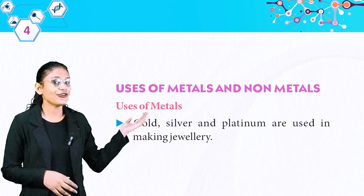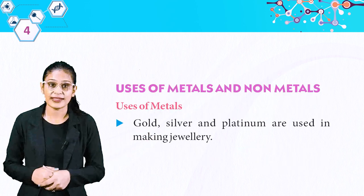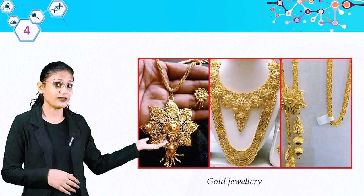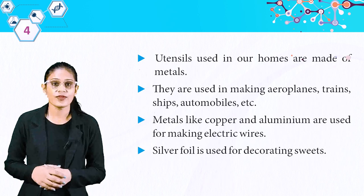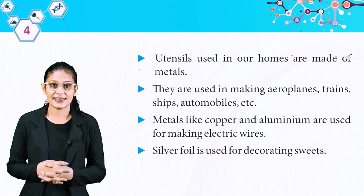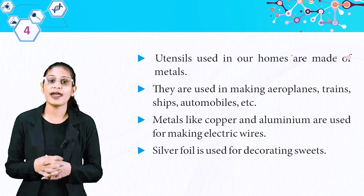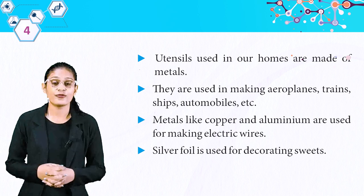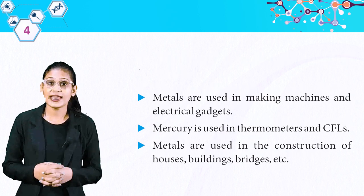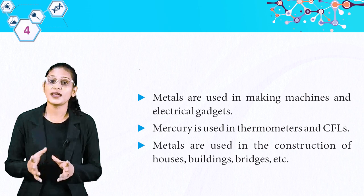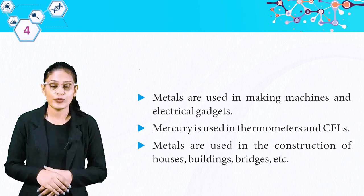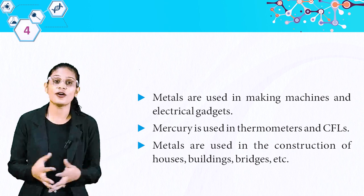Uses of metals: gold, silver and platinum are used in making jewellery. Utensils used in our homes are made of metal. They are used in making aeroplanes, trains, ships, automobiles, etc. Metals like copper and aluminium are used for making electric wires. Silver foil is used for decorating sweets. Metals are used in making machines and electrical gadgets. Mercury is used in thermometers and CFLs. Metals are used in construction of houses, welding, bricks, etc.